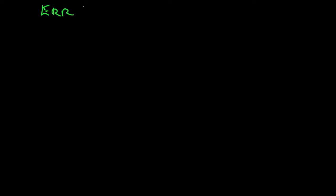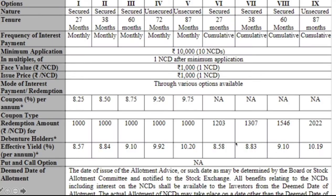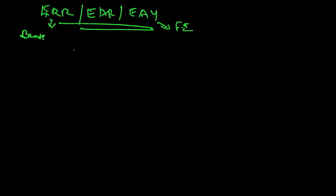Effective rate of return is also called effective annual rate or effective annual yield — all have the same meaning. Yield is more often used in fixed income products, while effective annual rate is more often used in banking. To illustrate, this example from Muthu Finance bond shows a coupon rate of 8.25% per annum but an effective yield of 8.57% per annum, and we'll see how that happens.